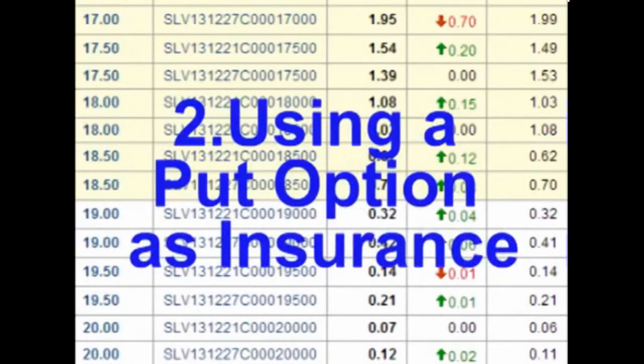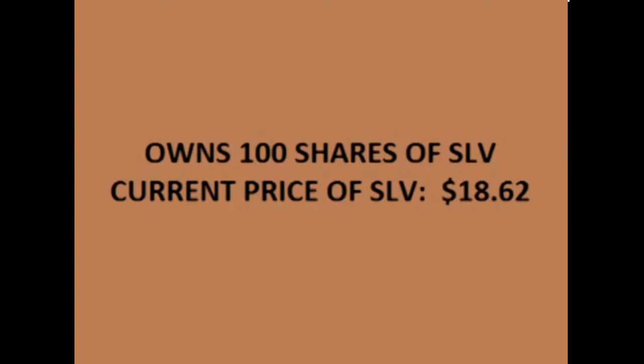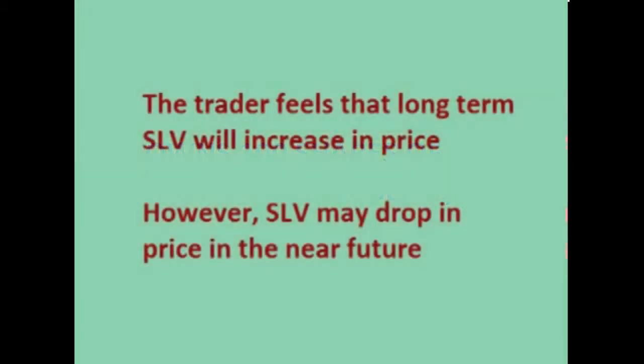Hello and welcome. In this video, we will look at one example of how put options are used as insurance to protect against loss in markets. Let's say a trader owns 100 shares of a stock or ETF. For this example, I will use SLV, the silver ETF. At the time of making this video, SLV has a current price of $18.62 per share.